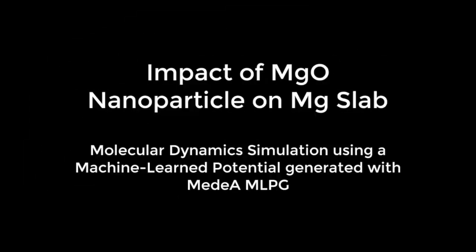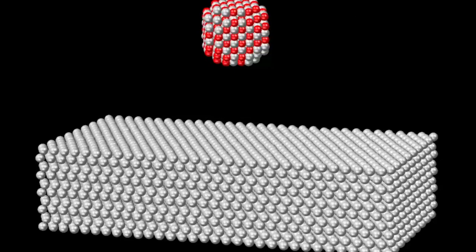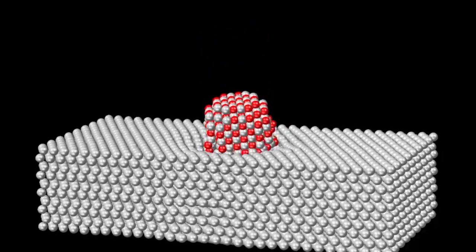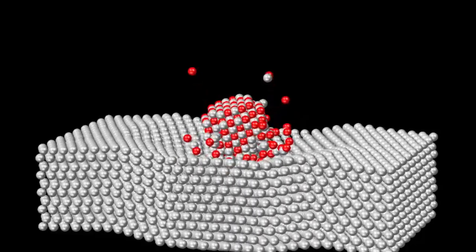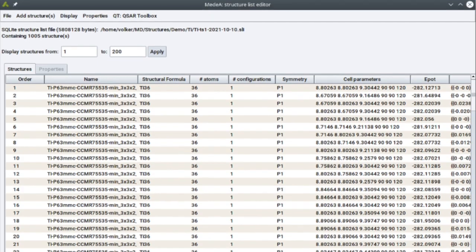Medea 3.4 makes available groundbreaking machine-learned potential or MLP capabilities, including neural network-based potential models and a fully integrated MLP generator. With these capabilities, users create highly accurate MLP descriptions of ab initio training sets for use with the LAMP's simulation environment.